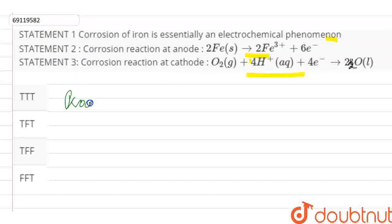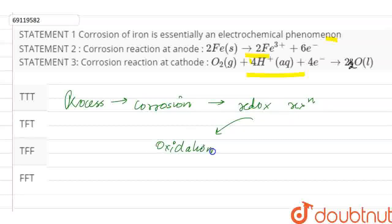What is our process? Corrosion. What is our reaction? Redox reaction. Because what happens simultaneously? Oxidation and Reduction. So, we can say that this is our electrochemical phenomenon.